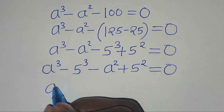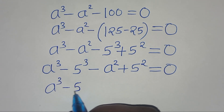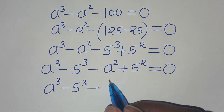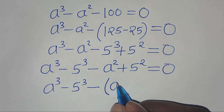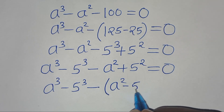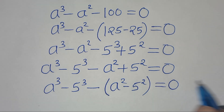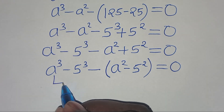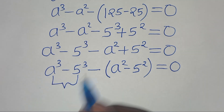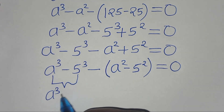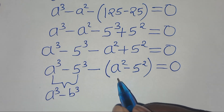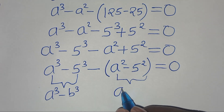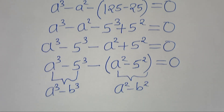So we have a to the power of 3 minus 5 to the power of 3, subtract a to the power of 2 plus 5 to the power of 2, this is equal to 0. Now, we have two parts here: the first part is the difference of two cubes expressed as a to the power of 3 minus b to the power of 3, and the second part is the difference of two perfect squares, which we can express as a squared minus b squared.